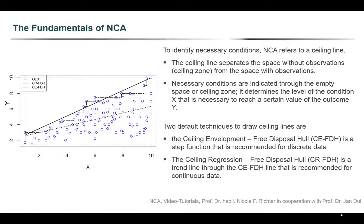Let us try to understand this a little bit better looking at the graph on the slide. Assume that we are interested in achieving a certain outcome level, let's say 8. If we look at this outcome level, we can see, as indicated through the empty space, that an outcome level of 8 is not achieved if we have a determinant value of 2 or 4, because there are no points indicating that there is a combination of these values. To achieve an outcome of 8, we at least need to have a value of the determinant that is around 8.2, if we look at the CRFDH ceiling line. That is, there is a certain minimum level of the determinant that is necessary to reach a certain level of the outcome.